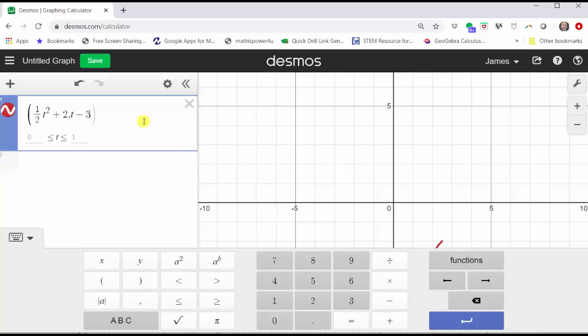Notice by default, the interval for t is from 0 to 1. We need to change this so that it's from -4 to 4. Click on the zero, enter -4, tab, 4.